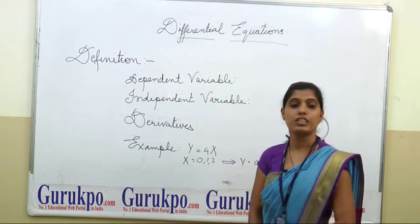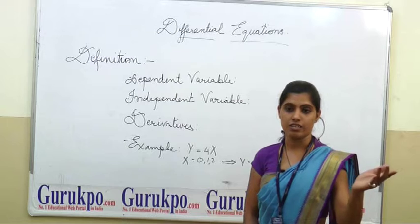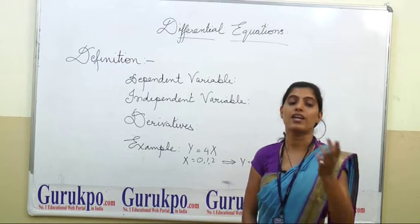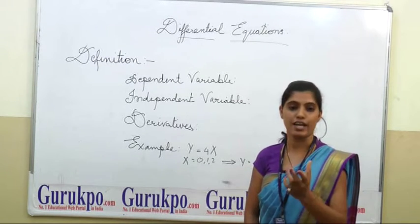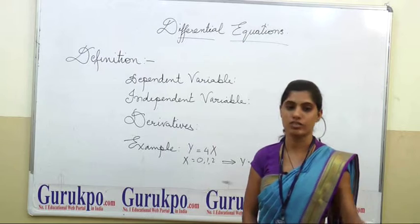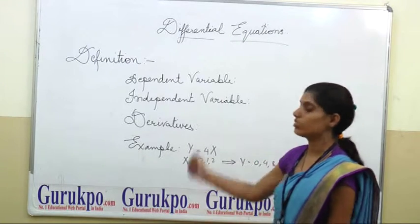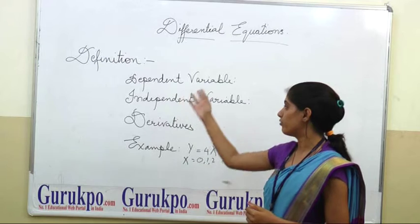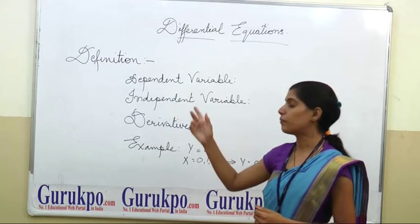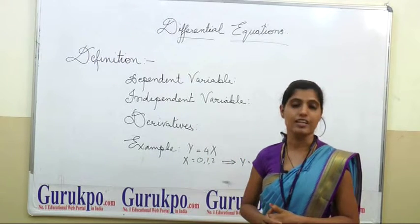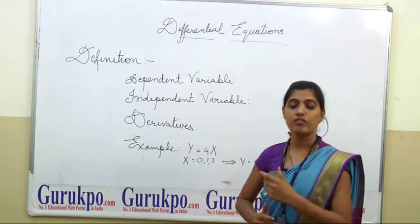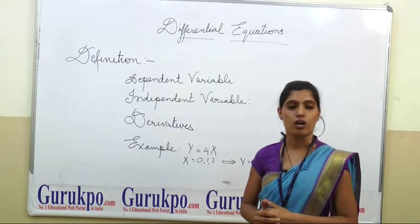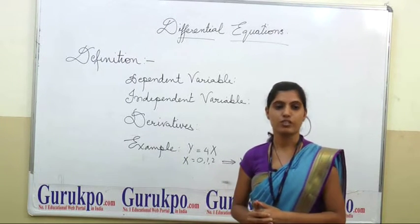For example, when a ball moves in a plane, the relation between time and velocity at a given time is described by a differential equation. A differential equation is an equation which contains dependent variables, independent variables, and derivatives of dependent variables with respect to independent variables.